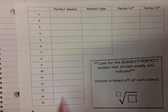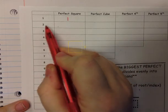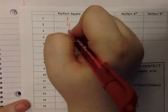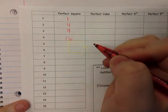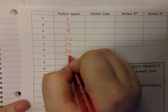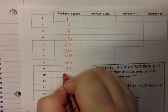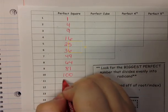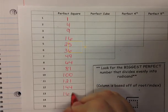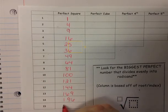For perfect squares, what we're determining is: what is 1 squared? 1 squared is just 1. 2 squared is 4. 3 squared is 9. 4 squared is 16. 5 squared is 25. 6 squared is 36. 7 squared is 49. 8 squared is 64. 9 squared is 81. 10 squared is 100. 11 squared is 121. 12 squared is 144. 13 squared is 169. 14 squared is 196. And 15 squared is 225.